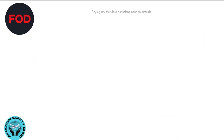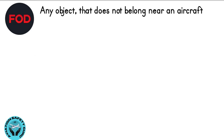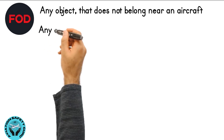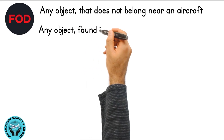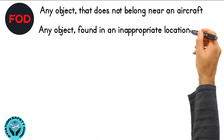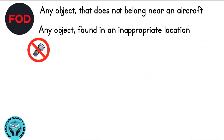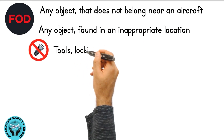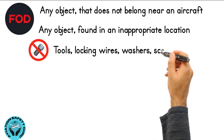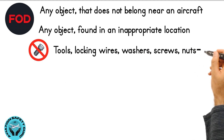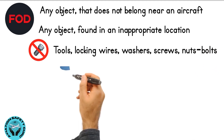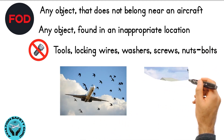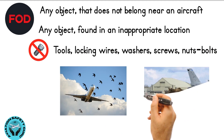FOD is any object that does not belong in or near aircraft, or any object found in an inappropriate location, such as tools, locking wires, washers, screws, nuts, or bolts. Even birds and wildlife are also included in FOD.